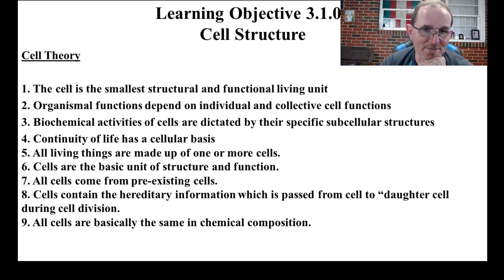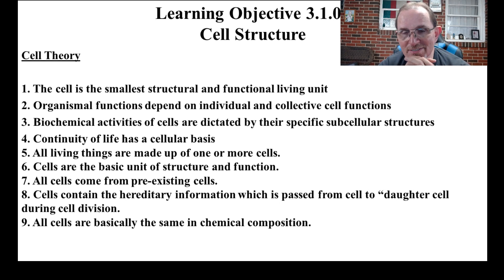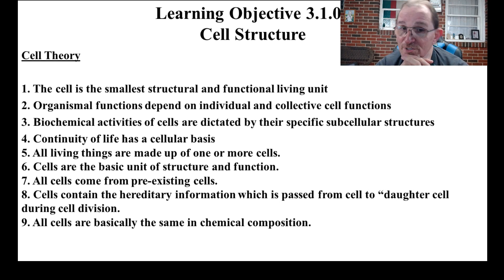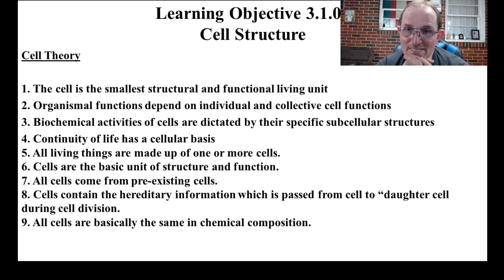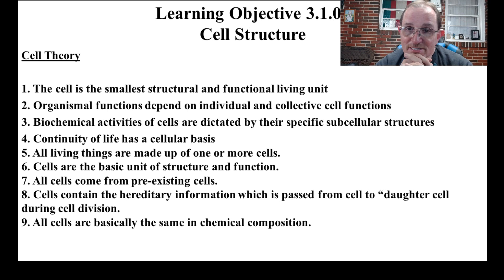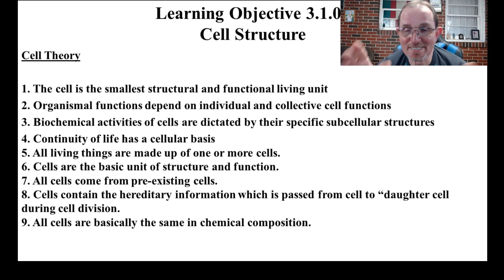The biochemistry of the cells depends on where they're at and what kind of structures they have in there. For example, the liver detoxifies things like alcohol and drugs, and so they have the right enzymes in their smooth ER to do that. Other cells don't have that. So depending on the job that the cell actually performs, they're going to have specific structures inside the cell that help with that.